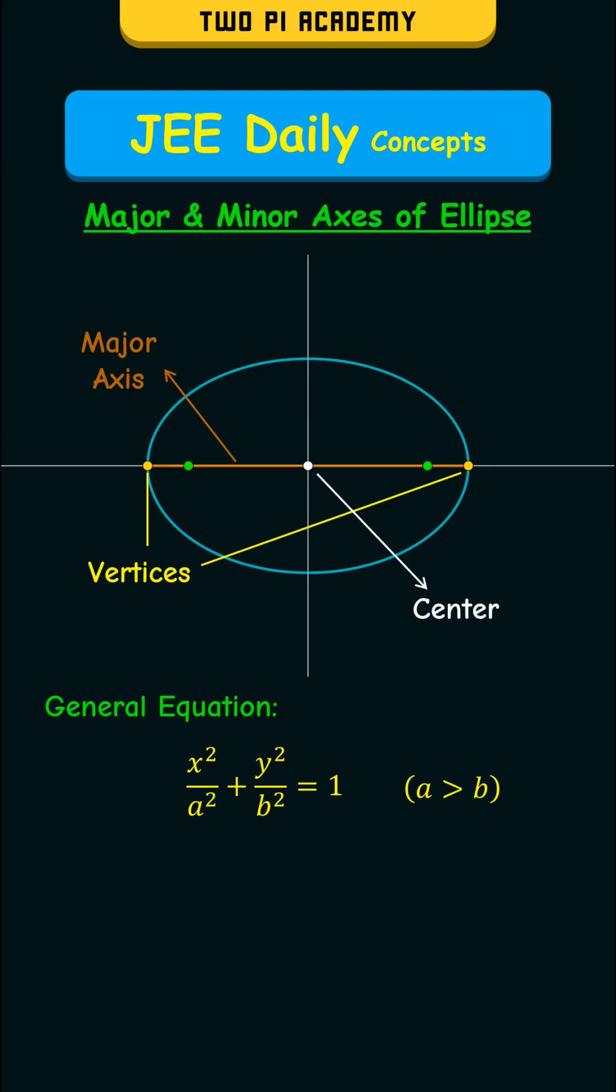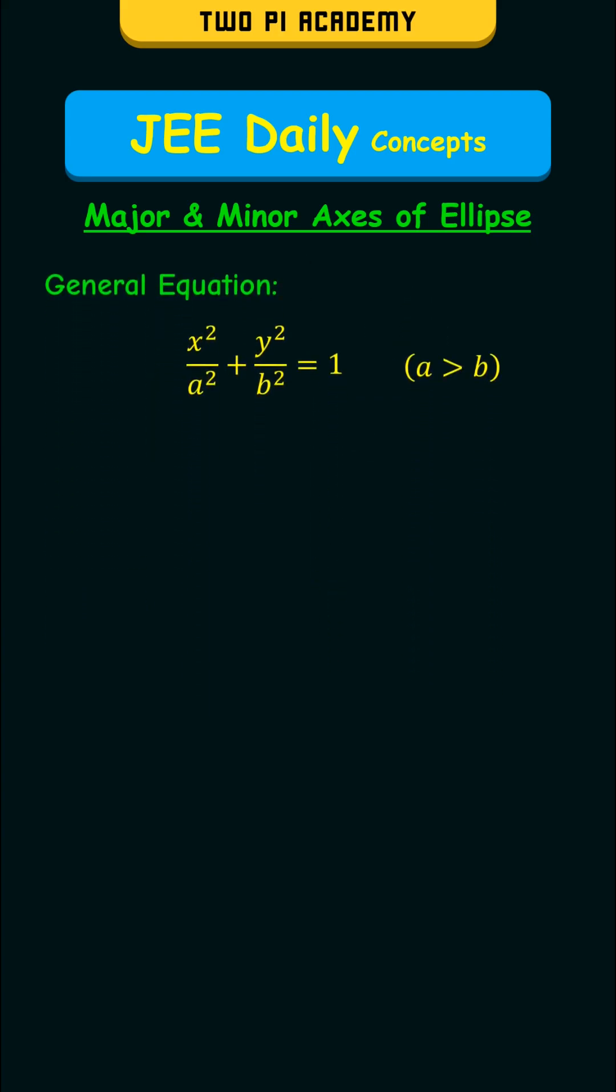The line that passes through the center and is perpendicular to the major axis is known as the minor axis. For the following general equation, the vertices are given by –a,0 and a,0. The origin is 0,0, and the major axis is the x-axis with its length being 2a.